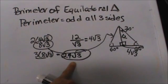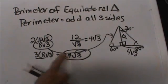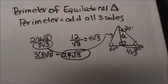So that is how you find the perimeter of an equilateral triangle. Hope this video is helpful.